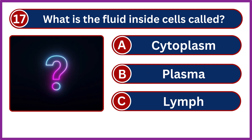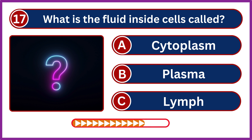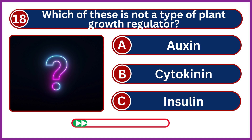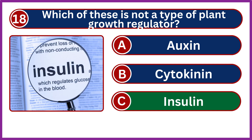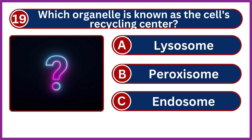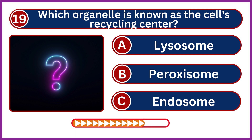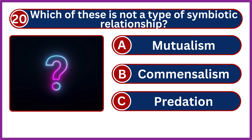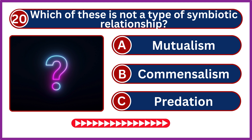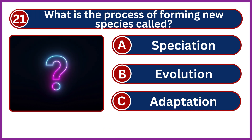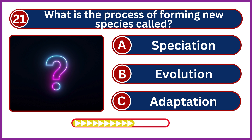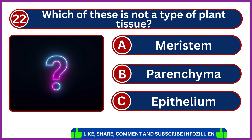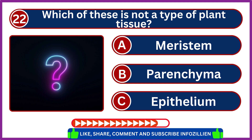What is the fluid inside cells called? Cytoplasm. Which of these is not a type of plant growth regulator? Insulin. Which organelle is known as the cell's recycling center? Lysosome. Which of these is not a type of symbiotic relationship? Predation. What is the process of forming new species called? Speciation. Which of these is not a type of plant tissue? Epithelium.